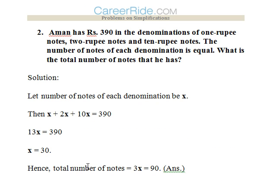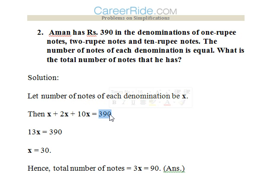Second question: Amon has ₹390 in denominations of 1-rupee, 2-rupee, and 10-rupee notes. The number of notes of each denomination is equal. We assume the number of notes of each denomination is x. So the total value is: 1·x + 2·x + 10·x = 13x, which equals 390.